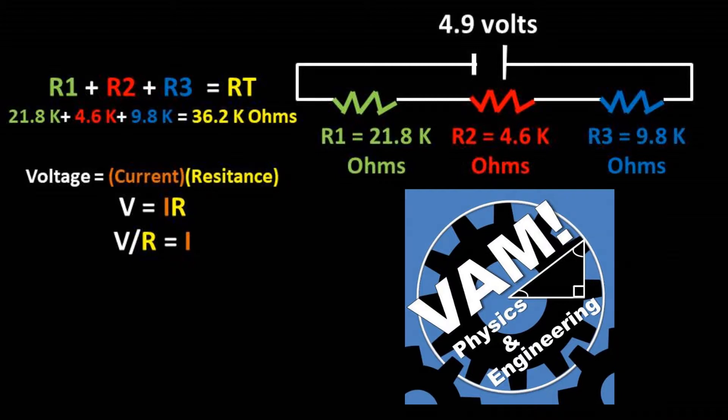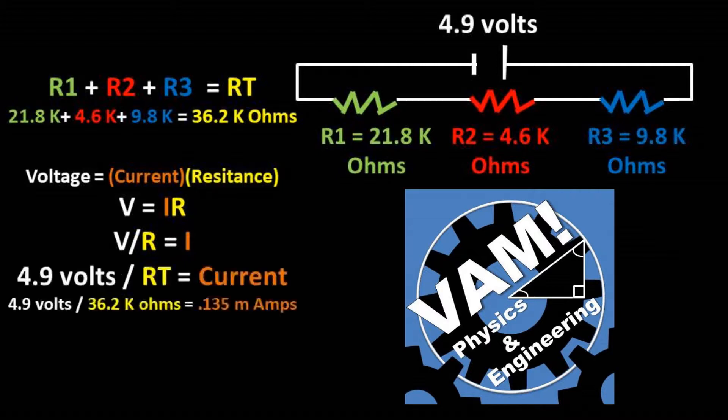Rearranging the formula so that current is on one side, we get that voltage over resistance equals current. Now to find the current that is going through this circuit, we can take the voltage of 4.9 volts over the total resistance that we found of 36.2 thousand ohms. After plugging in our numbers, we get a total current of the circuit of 0.135 milliamps.